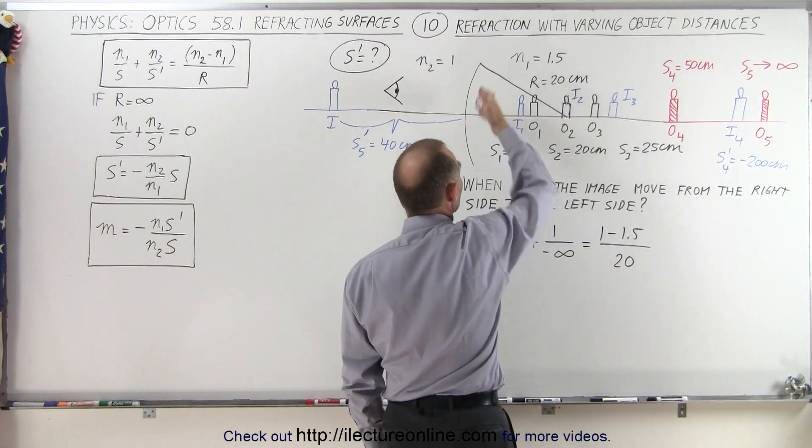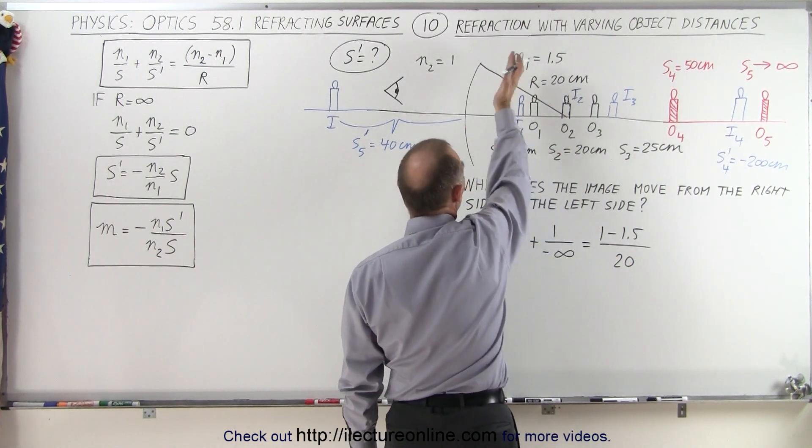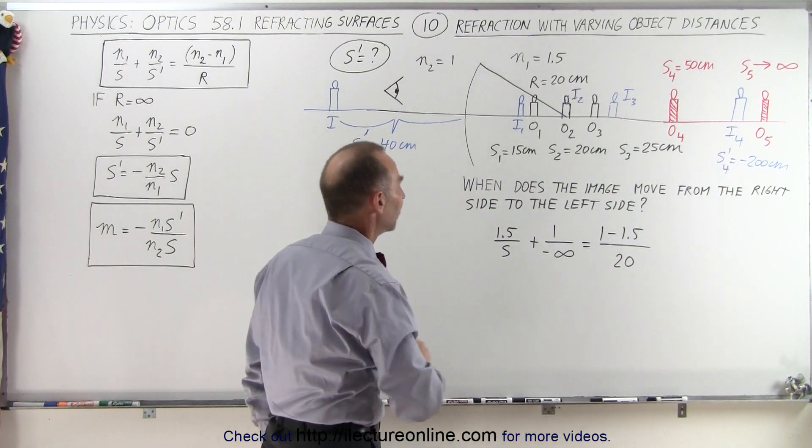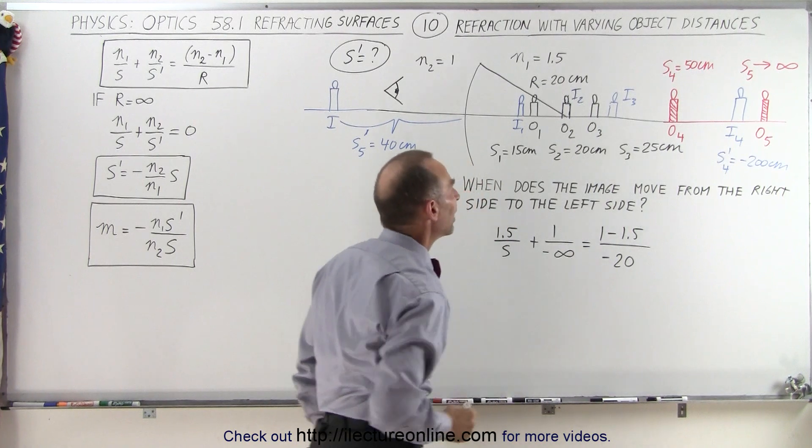Again, the curvature radius is bulging away from the object, therefore it's concave. Concave means a negative radius of curvature.